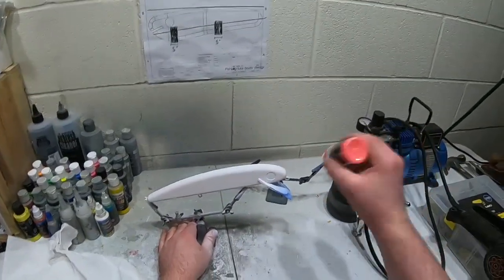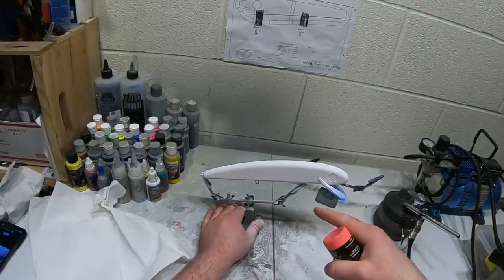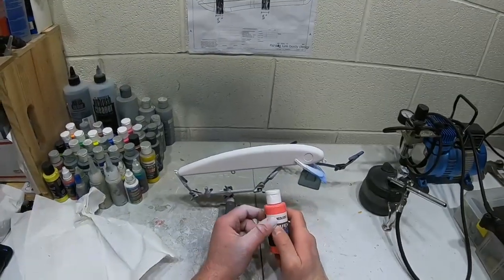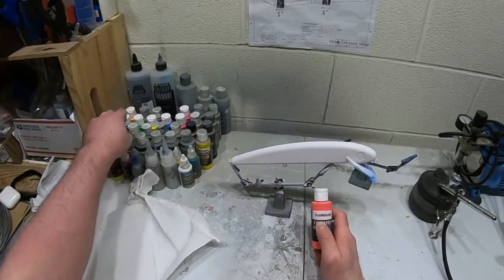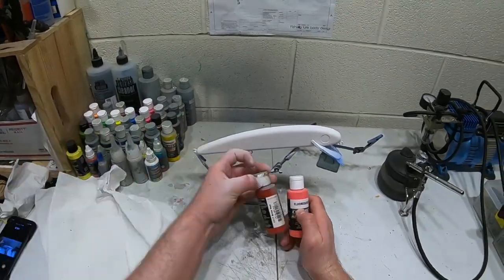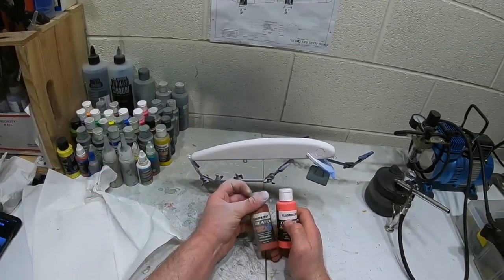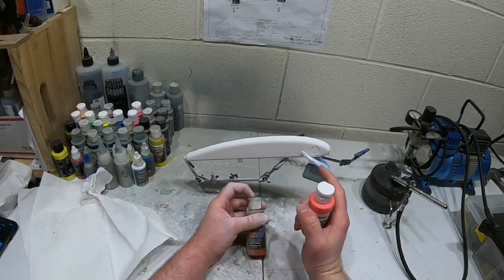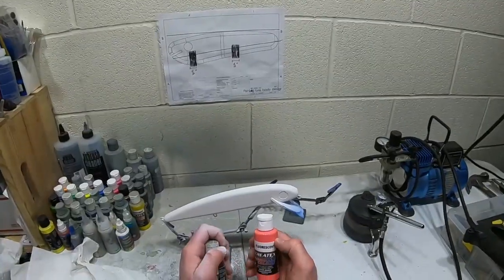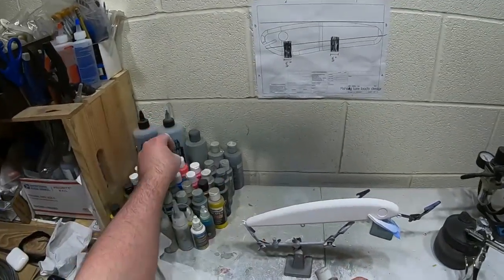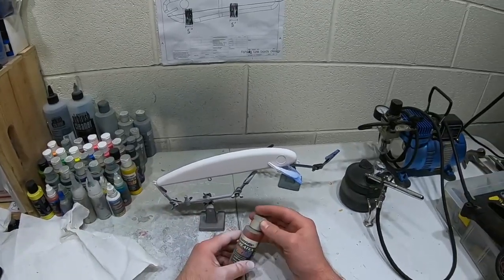Actually, I take that back. I'm not going to do a fluorescent red underneath. I'm going to do a transparent red underneath, a bright red, and then I'll detail it with the fluorescent red. So let's do the transparent red right now.